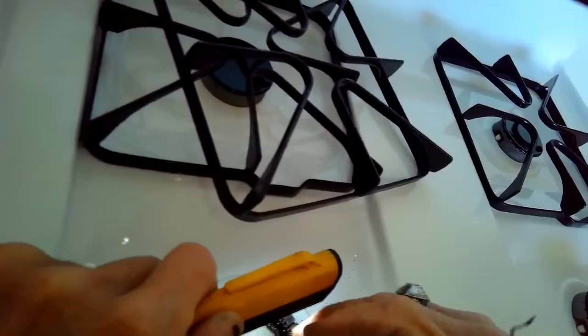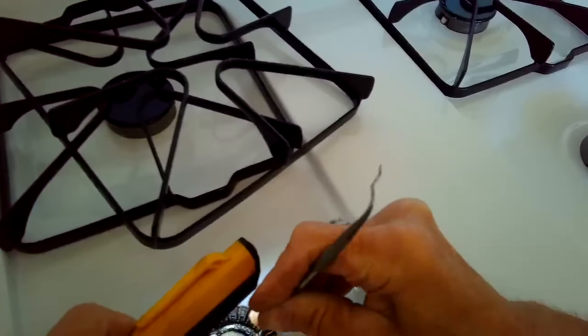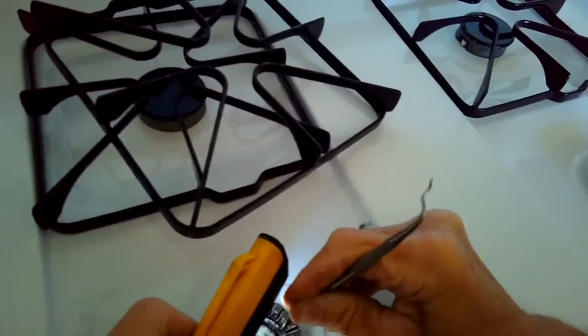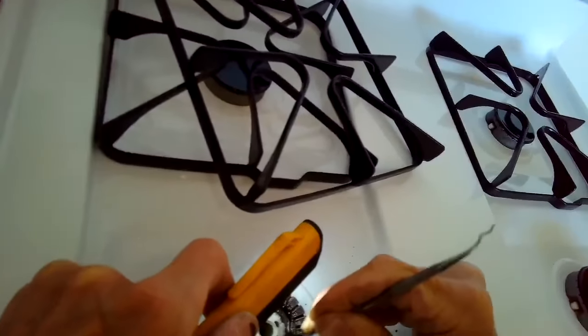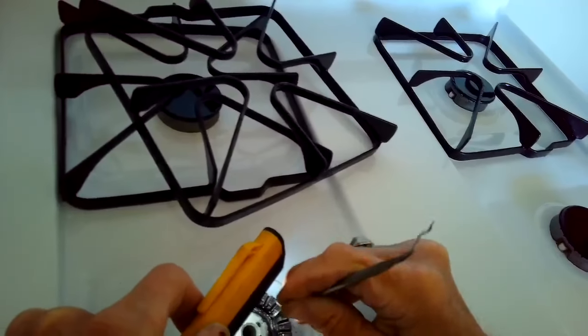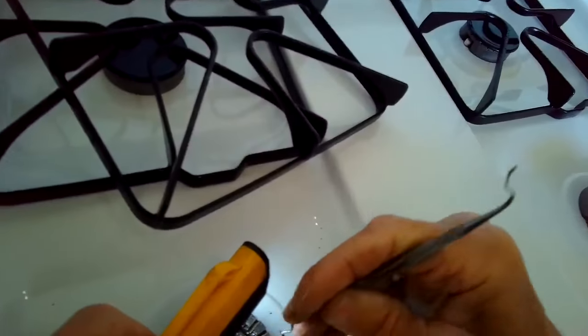So I had to get in there and scrape some of the stuff off. It looked like probably at some point some milk was being cooked or some rice and it boiled over and coated the metal surface.